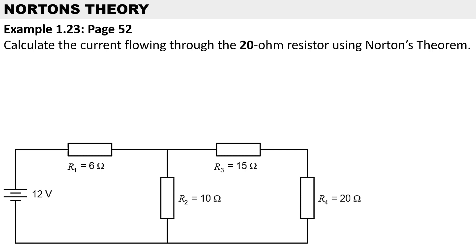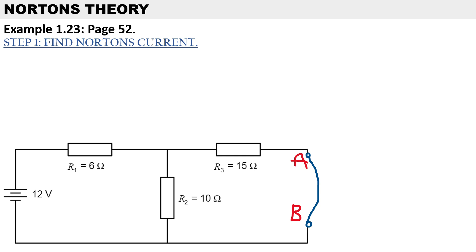The first step to solve Norton's theorem is to find Norton's current. What we've done here is short-circuited the load resistor — we can call this the short-circuit current, and that is basically the same as Norton's current.